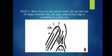Rule 4: when there are two rods in the center, the one with the higher shoulder line — the upper point of that ridge — is considered the point of the core. In this figure, we have two rods, A and B. Under this rule, the core is located at the upper point of the higher shoulder line. Thank you and stay safe.